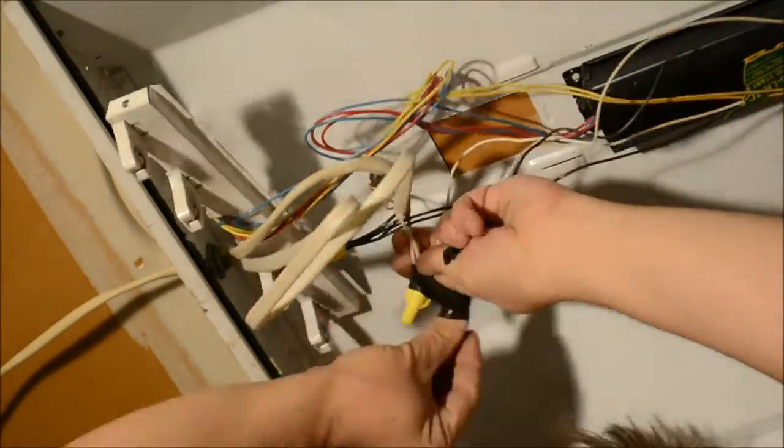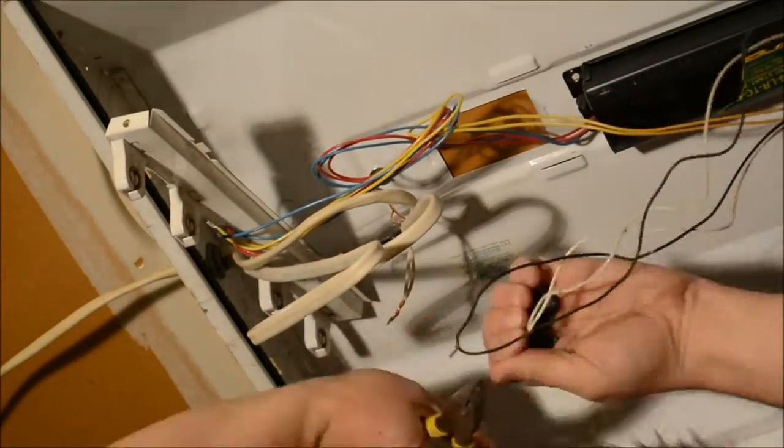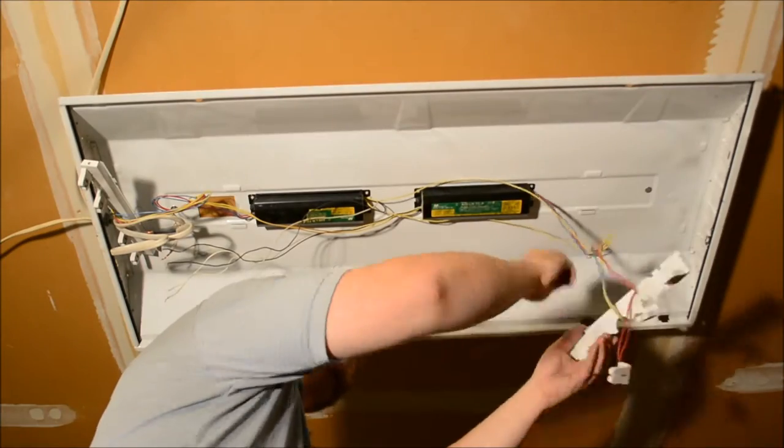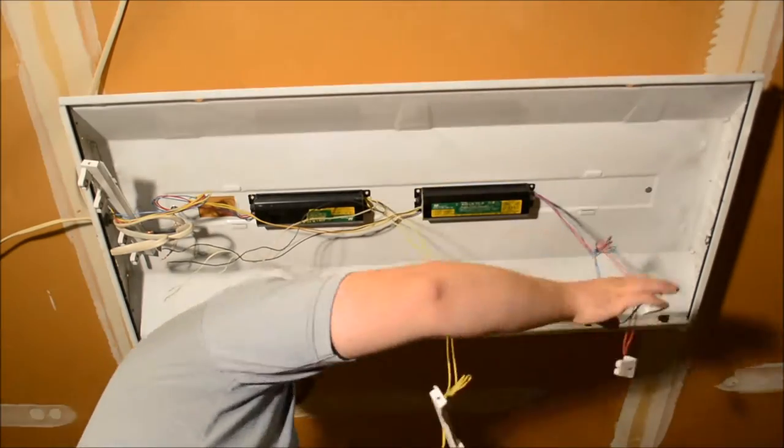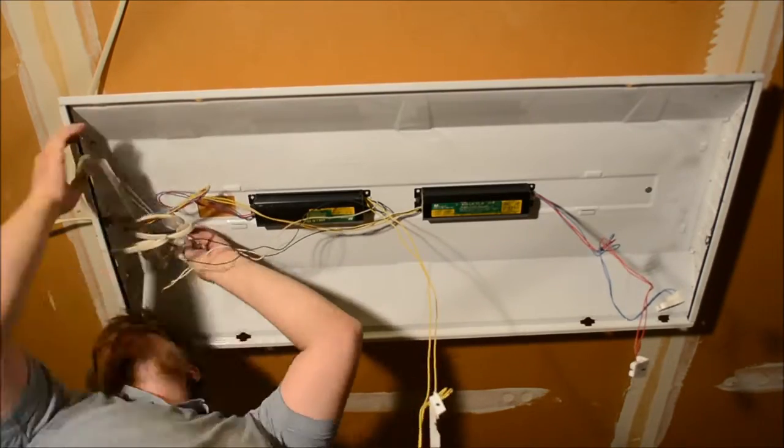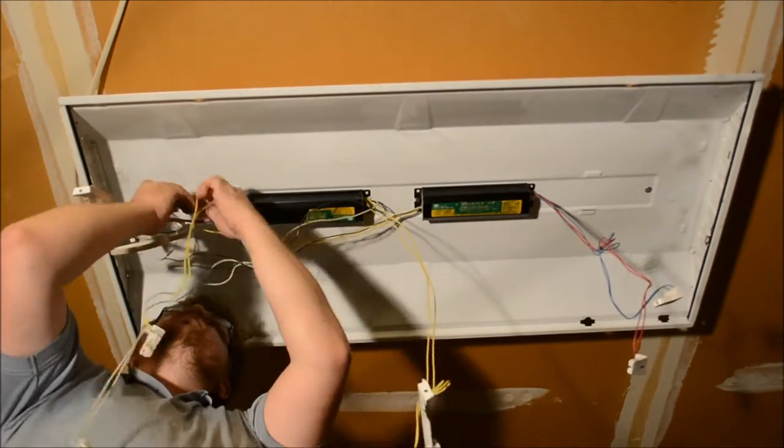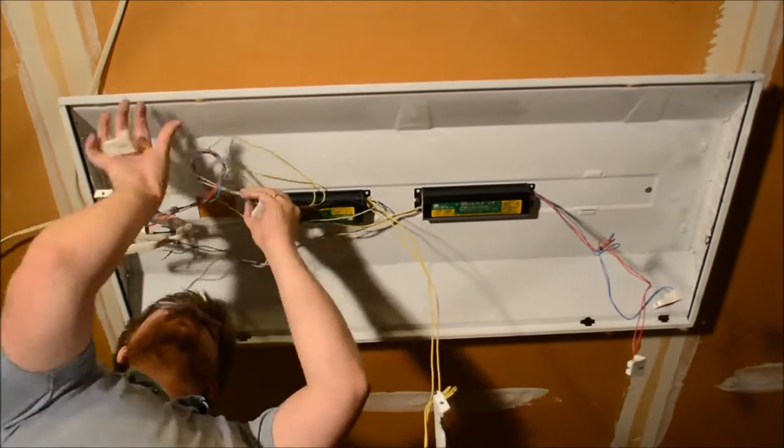Next you'll need to disconnect the black and white wires from the ballast so that you can remove it. Next, pull the tombstones from the brackets that they're in that's corresponding to the bad ballast and then disentangle all the wires.